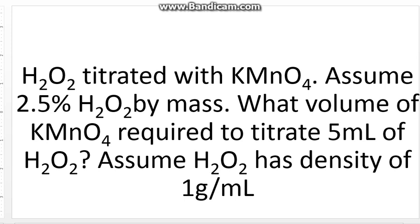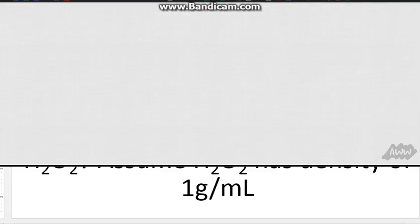Now the other part of lab 10 is going to be trying to figure out how much, well so we've got this problem. We've got H2O2 and it's being titrated with KMnO4. We're going to assume that we have 2.5% H2O2 by mass and I'll talk about what that means in a second. So we are trying to figure out what volume of KMnO4 is required to titrate 5 milliliters of the H2O2. So we're going to go ahead and assume that H2O2 has a density of 1 gram per milliliter and let's go over to our drawing board.